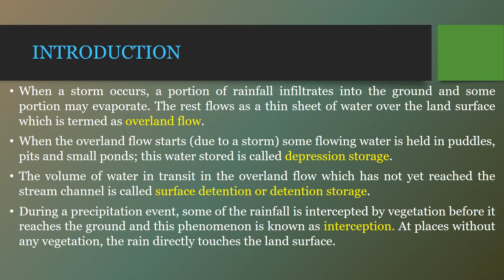Before the introduction, what is runoff? Runoff is defined as the portion of the precipitation that makes its way towards a river, ocean, or any water body as surface or subsurface flow. The discharge flowing in a river is the runoff from the basin drained by that river.